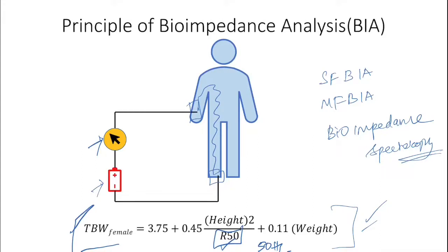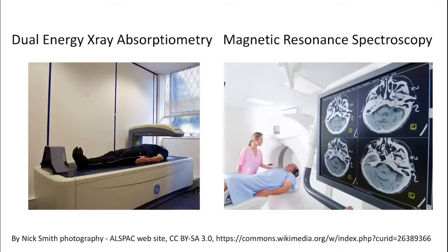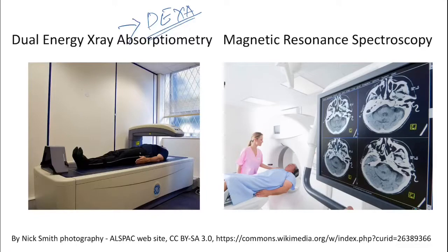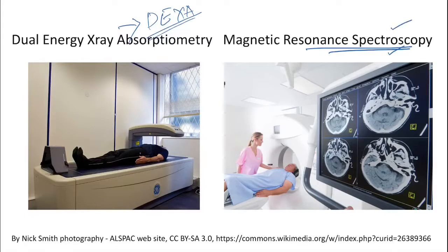Other methods include dual energy X-ray absorptiometry, also called DEXA scan, where two X-ray beams of different energies are used and their differential absorption is studied to measure body fluids. Magnetic resonance spectroscopy is another technique used to identify body composition.